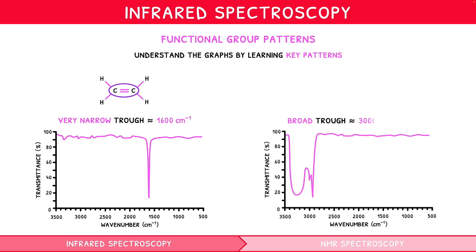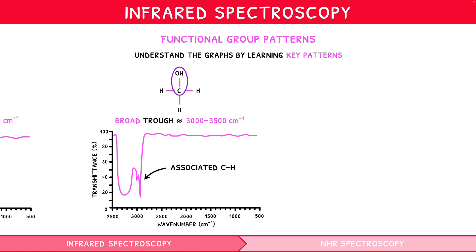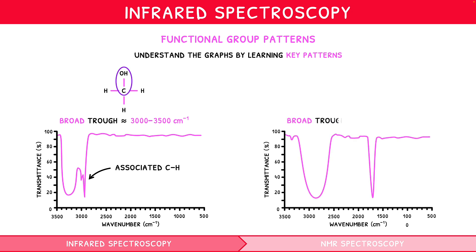A trough between 3000 to 3500 cm⁻¹ indicates a hydroxyl group (O–H), which, since an alcohol will always contain an alkyl group, is always associated with a trough centred around 3000. And a very large trough between 2500 to 3500 cm⁻¹ indicates a hydroxyl group (O–H) within a carboxylic acid, which, since a carboxylic acid will always contain a carbonyl group, is always associated with a narrow trough at 1700 cm⁻¹.